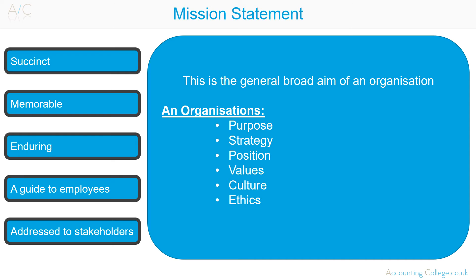So how does an organisation know if they are achieving the mission? This is where organisations use strategic plans and objectives. When reviewing the performance of an organisation, the management accountant should always keep the overall mission of the organisation in mind — how is the organisation performing with regards to its mission, and are the measurements used suitable to assess the achievement of the organisation's mission?